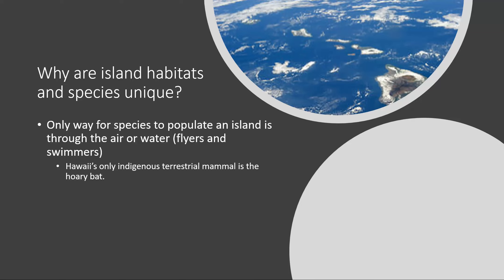Hawaii is volcanic, meaning it formed from the outpouring of lava under the ocean that eventually made its way to the surface. The only way for animals to populate Hawaii would be through the ocean or by flying across large spans of open water. As a result, the only terrestrial mammal indigenous to Hawaii is the hoary bat. Lizards, snakes, and amphibians are present now, but they've been brought there by people.